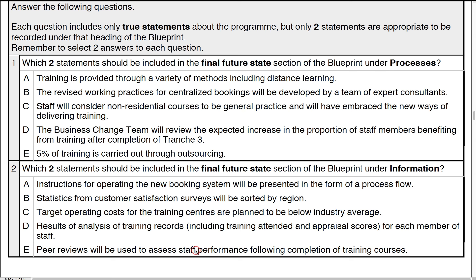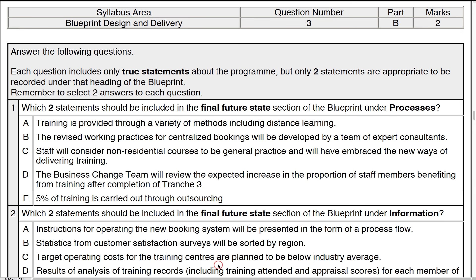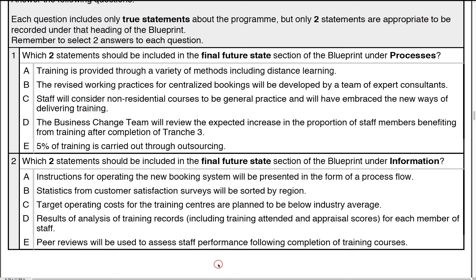So the answers here are B and D — Baker and Delta. If you have any concerns with the answers or are not sure why they're the right ones, review through the blueprint design and delivery chapter and look at the POTI descriptions again for processes, organisation, technology and information to understand what's in there. Or contact a tutor for further clarification.